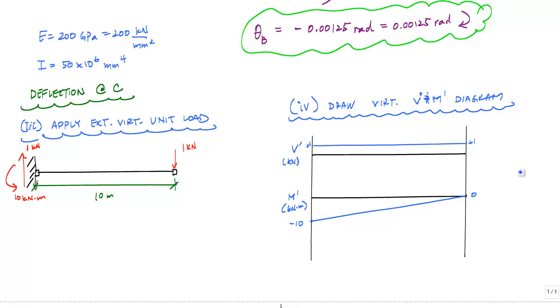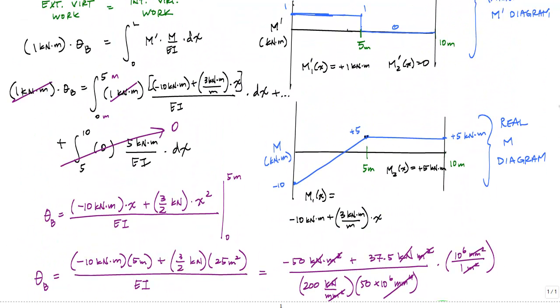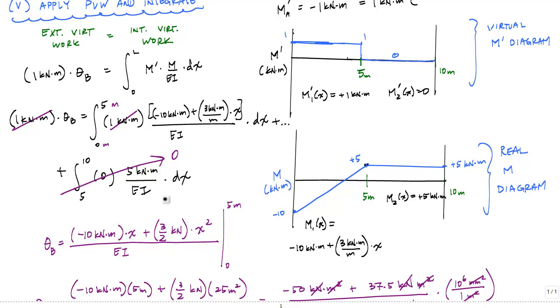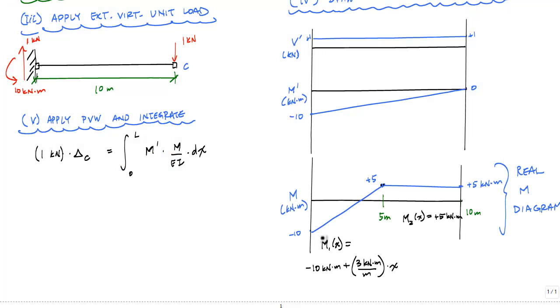Now that I have my virtual and my real moment diagrams, I can apply the principle of virtual work and integrate. And this time, because I applied a unit force and I'm looking for a displacement, my formulation for external work is 1 kilonewton times Δ_C at point C, the tip of the cantilever, is equal to the internal virtual work over the entire length of the beam. Notice, one thing you can always notice is that this M over EI component will not change, and the only thing that changes is the virtual moment. So here, we're going to have the same formulation, this curvature is going to remain the same. And if you recall from the moment diagram, this was my real moment diagram.